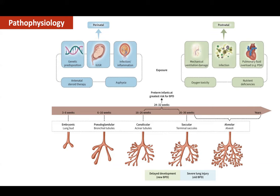Perinatal risk factors for BPD include infections, IUGR, asphyxia, not giving antenatal steroids, and genetic predisposition. Postnatal risk factors include exposure to high oxygen, high ventilatory requirements, infections, pulmonary overload due to hemodynamically significant PDA, and nutritional deficiencies. BPD is essentially a preterm disease often associated with infections, asphyxia, inflammation, oxygen toxicity, and nutritional deficiencies.